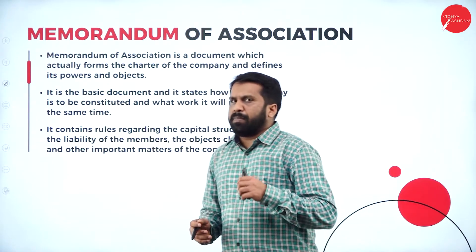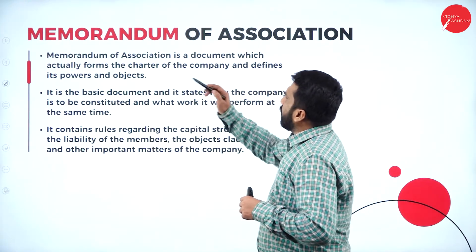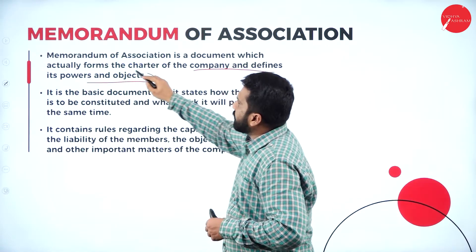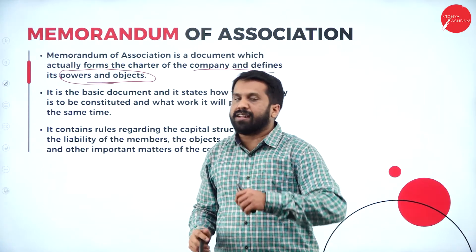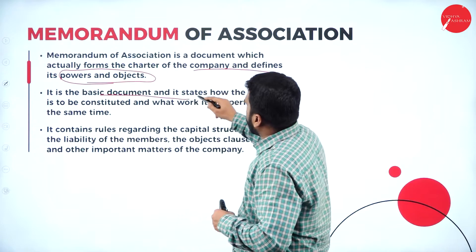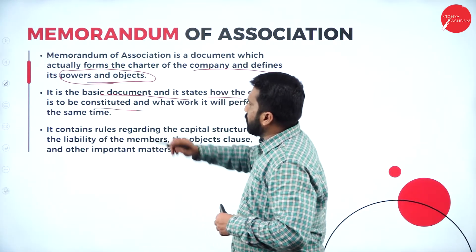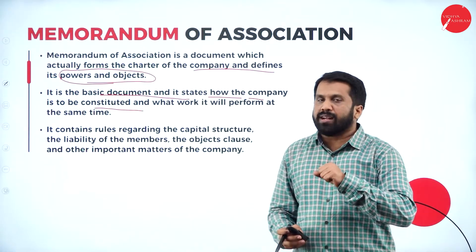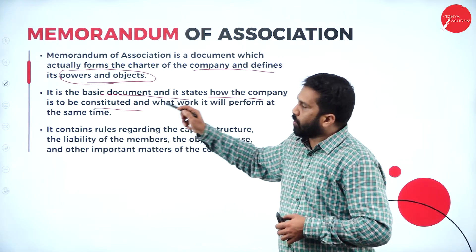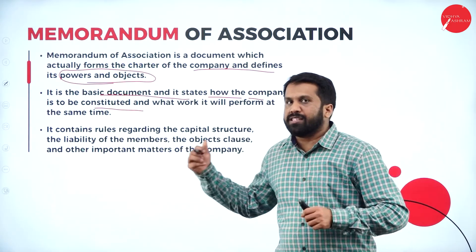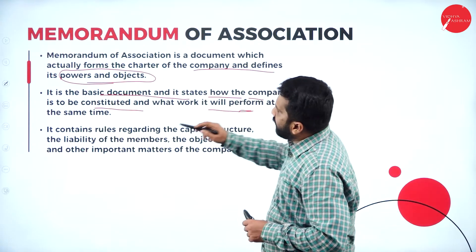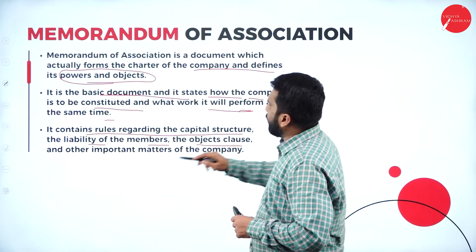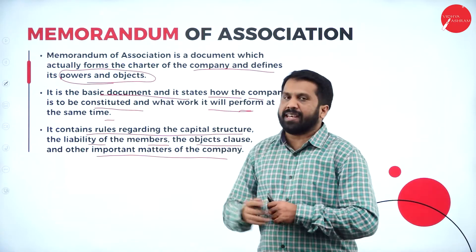Memorandum of association is a document which actually forms the character of the company and defines its powers and objects. It is a basic document that states how the company is to be constituted — just as the Bhagavad Gita is for Hindus, the Bible for Christians, and the Quran for Muslims, similarly the memorandum is the foundational document for a company. It also contains rules regarding the capital structure, the liability of members, the object clauses, and other important matters.